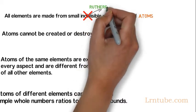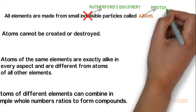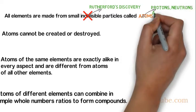according to Rutherford's discovery, an atom is made up of three main subatomic particles called protons, neutrons and electrons.